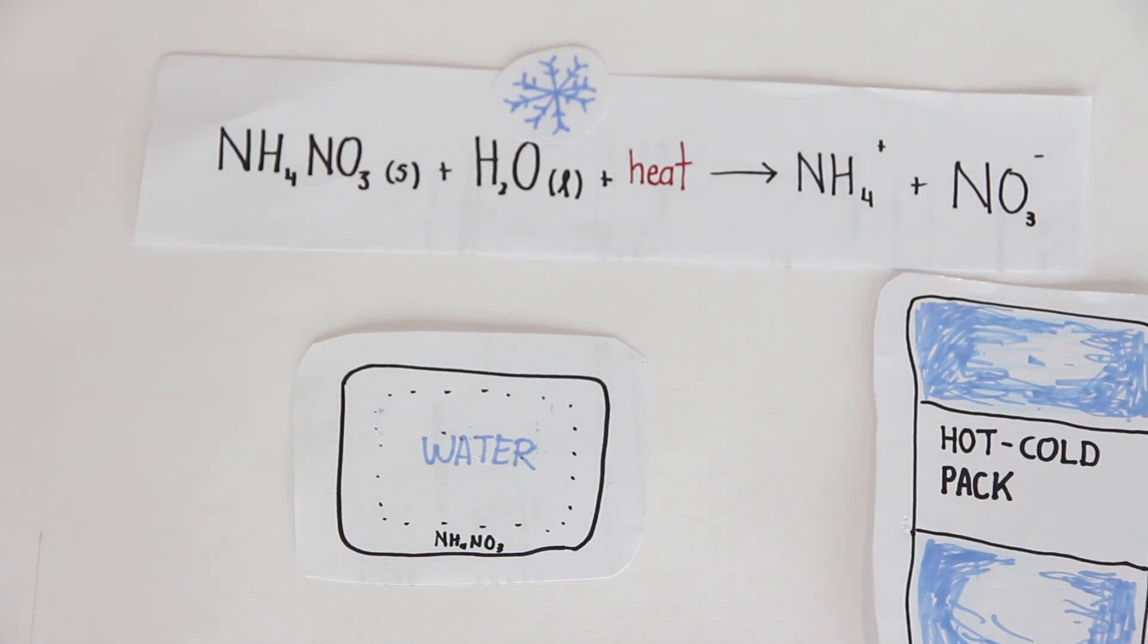The outer pouch of the cold pack contains a type of dry substance existing in powder form, which is usually ammonium nitrate. It is sealed off from the water in the inner pouch.